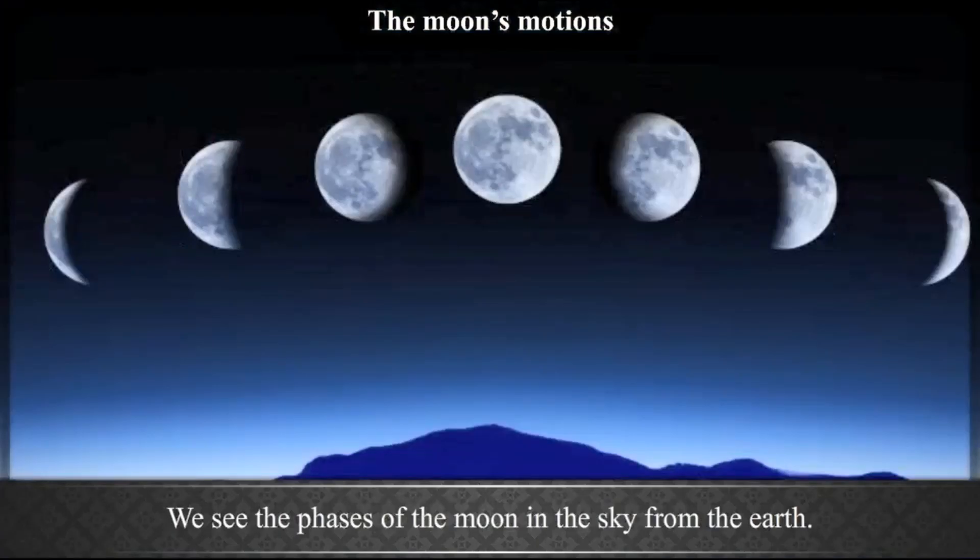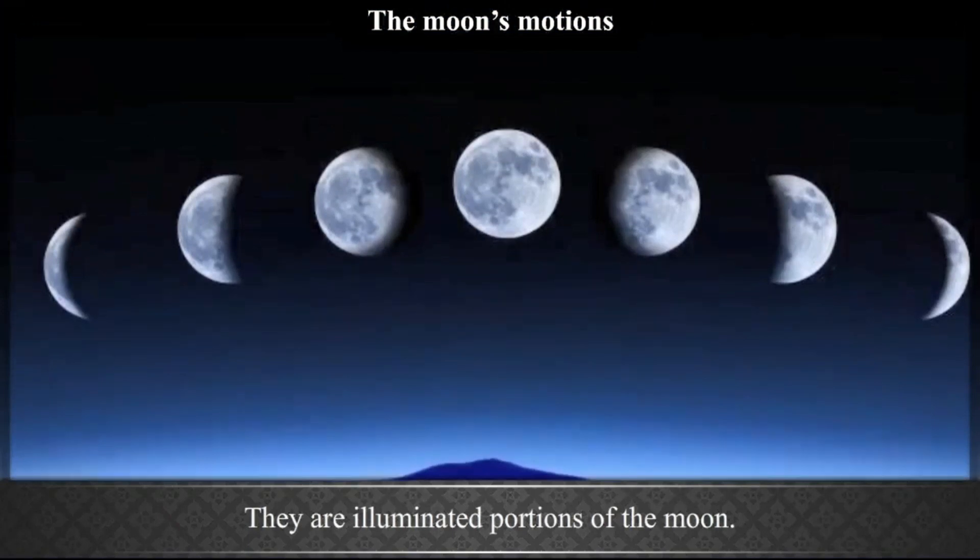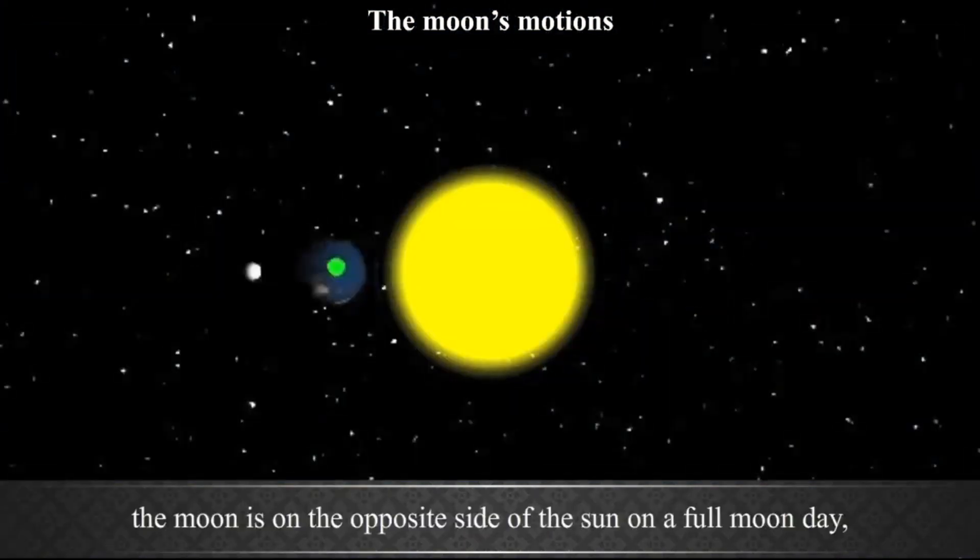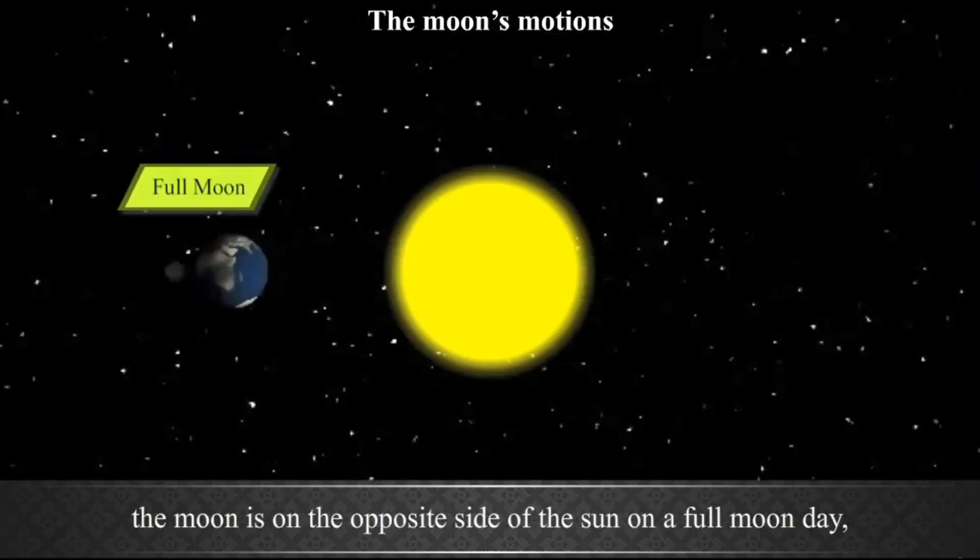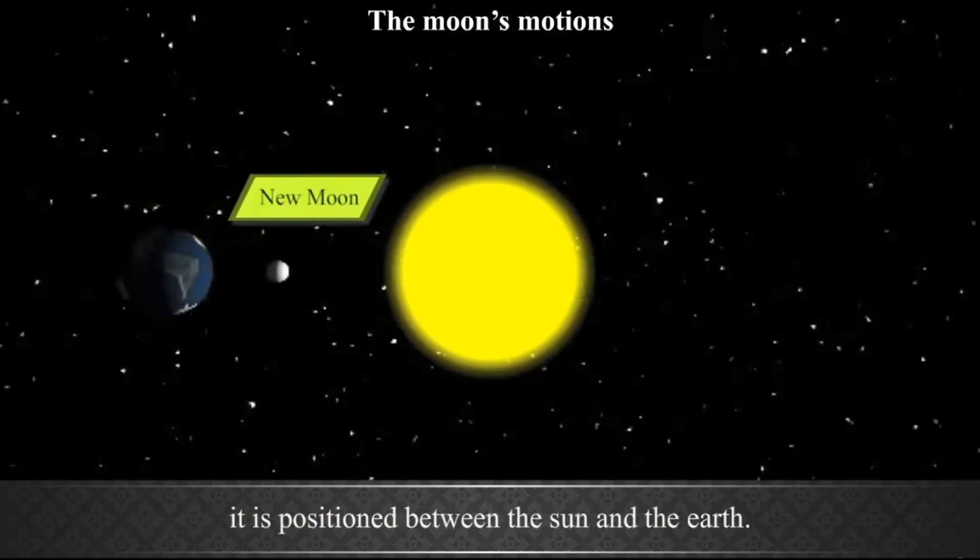We see the phases of the Moon in the sky from the Earth. They are the illuminated portions of the Moon. They become visible due to the sunlight reflected from the Moon. While revolving around the Earth, the Moon is on the opposite side of the Sun on a full moon day. Whereas, on a new moon day, it is positioned between the Sun and the Earth.